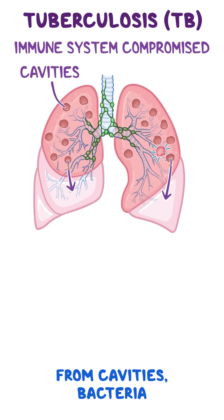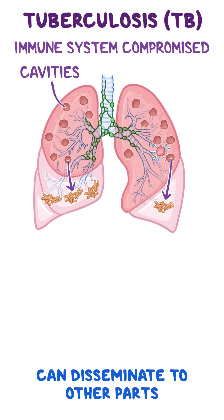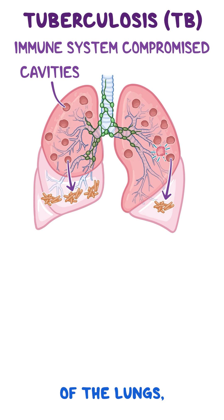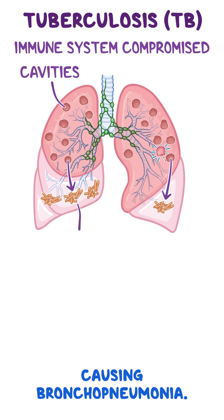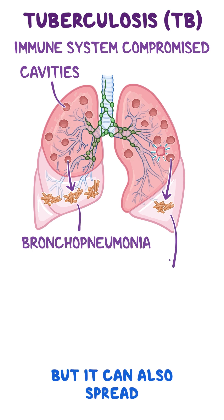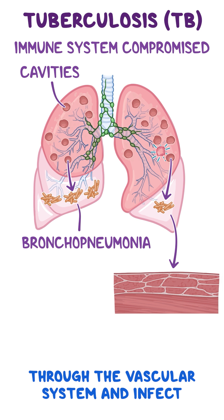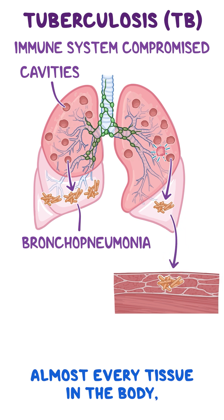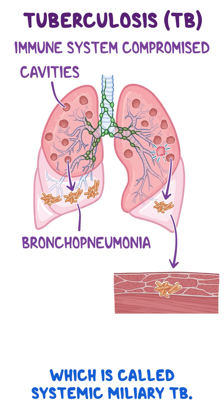From cavities, bacteria can disseminate to other parts of the lungs, causing bronchopneumonia, but it can also spread through the vascular system and infect almost every tissue in the body, which is called systemic miliary TB.